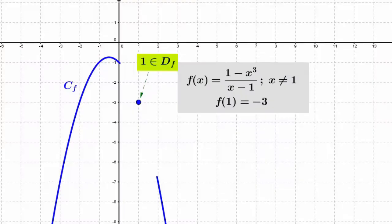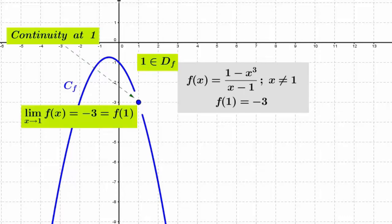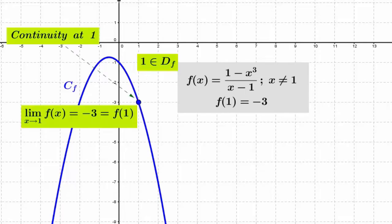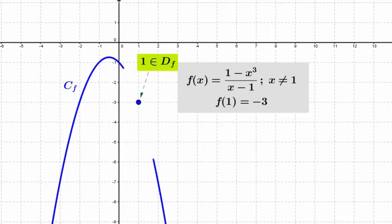Finally, the two pieces of the graph are well connected because the function is continuous at 1. Continuity at 1 means that we can sketch the graph in the vicinity of 1 without picking up the pen.